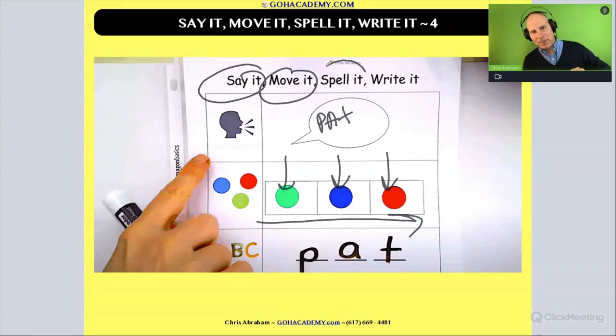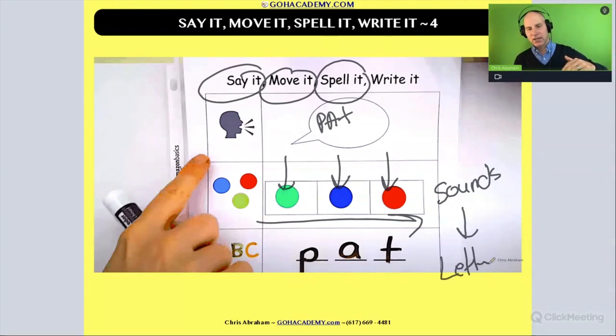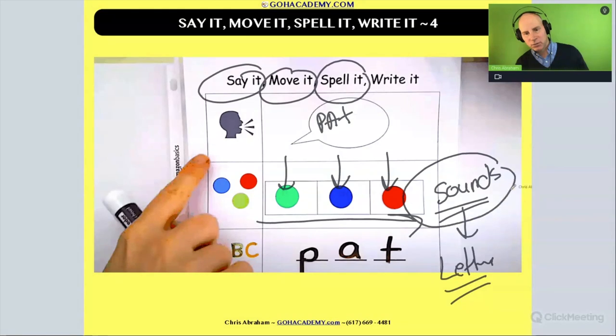Now when we add in spell it, now what we're doing is we're helping the student take sounds or we say phonemes and match them up with letters. Or in this case, we're going to call those graphemes or spelling patterns. So now we're taking sounds, matching up with their correct spelling patterns. We're doing phoneme-grapheme correspondence or mapping. But basically we're practicing spelling. We're matching sounds with the correct spelling patterns. You see that?